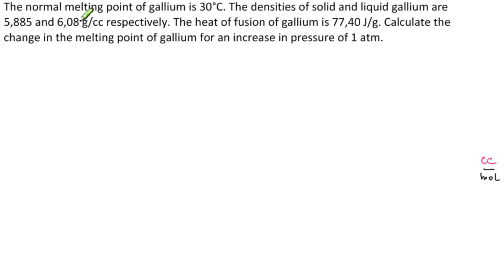The problem reads: the normal melting point of gallium is 30 degrees Celsius. The densities of solid and liquid gallium are 5.885 and 6.08 grams per cubic centimeter, respectively. The heat of fusion of gallium is 77.40 joules per gram. Calculate the change in the melting point of gallium for an increase in pressure of 1 atmosphere.